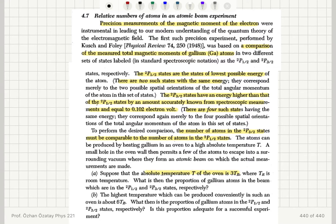Suppose the absolute temperature of the oven is 3TR, where TR is room temperature. What is the proportion of gallium atoms which are in the 2p½ and 2p3/2 states respectively? The highest temperature which can be produced conveniently in such an oven is about 6TR — what is then the proportion of gallium atoms in each state, and is this proportion adequate for a successful experiment?